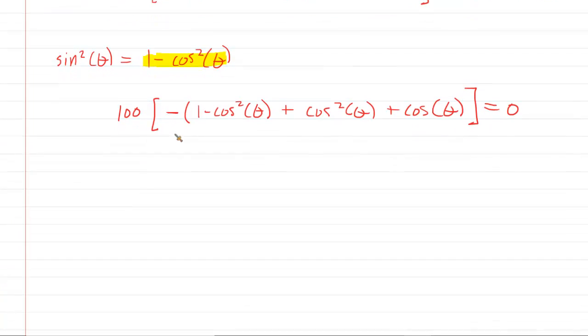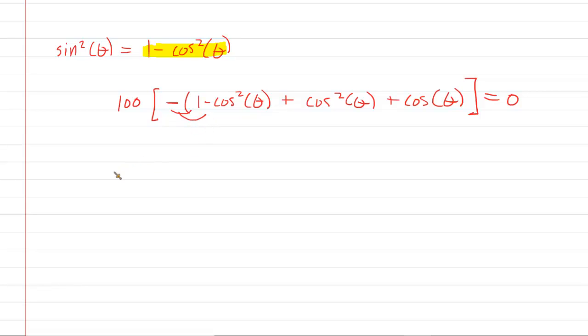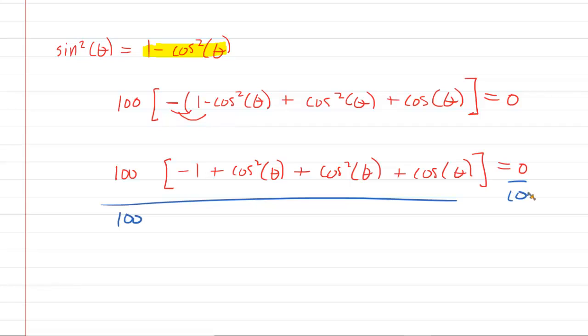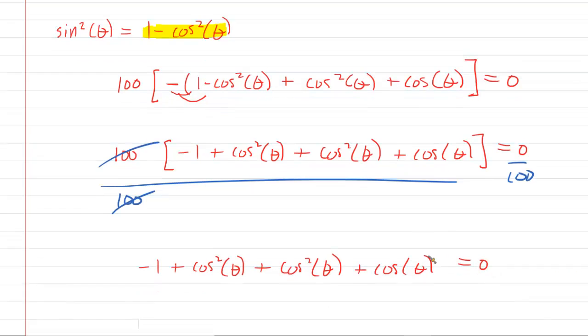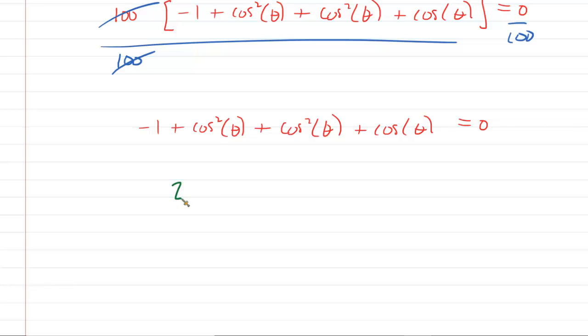We next distribute this minus sign. This gives us -1 + cos²(θ), plus cos²(θ), plus cos(θ). The 100 in front is annoying, so why don't we divide both sides by 100? That crosses it off on the left side. Notice the right-hand side still remains 0. We don't need this bracket either. We can combine the cosine squareds to make 2 cos²(θ), plus cos(θ), minus 1 equals 0.